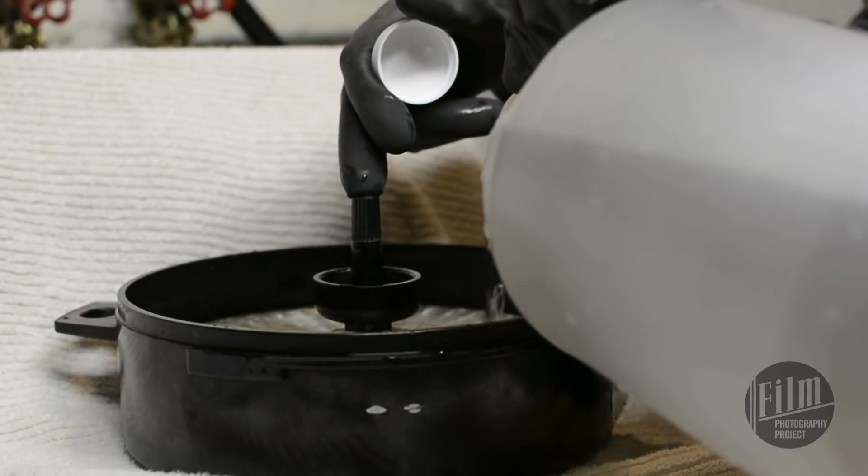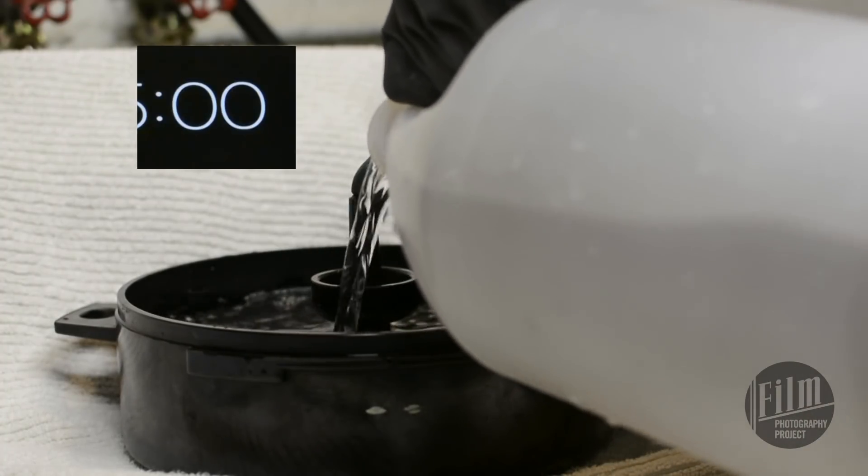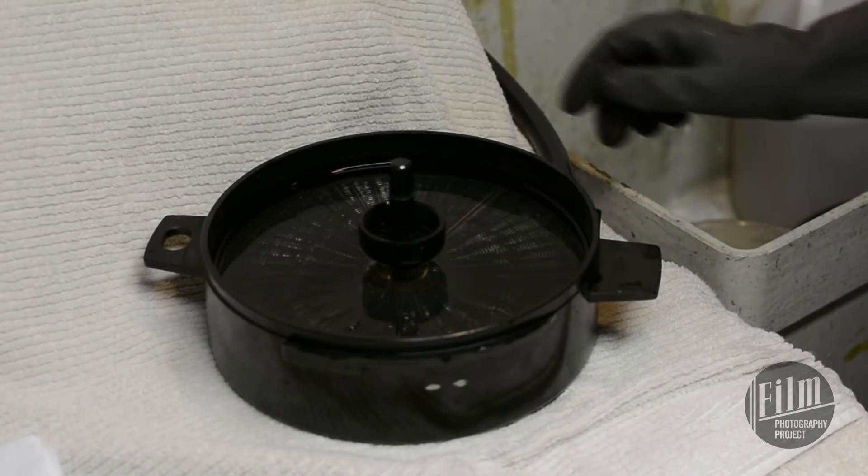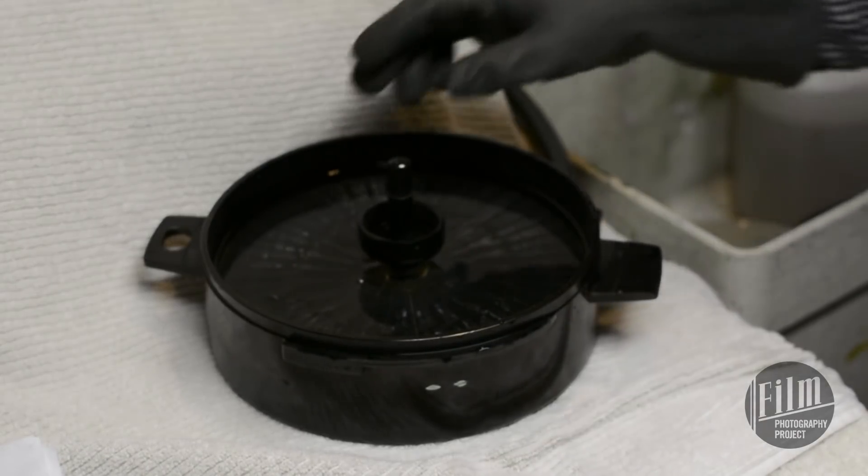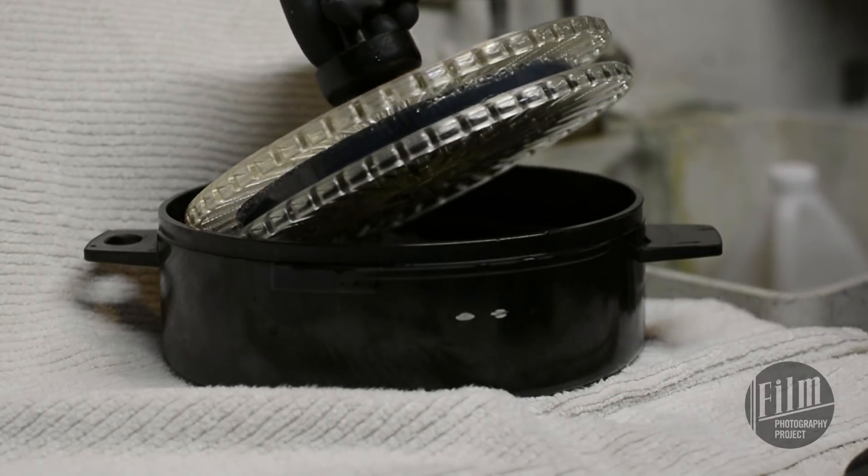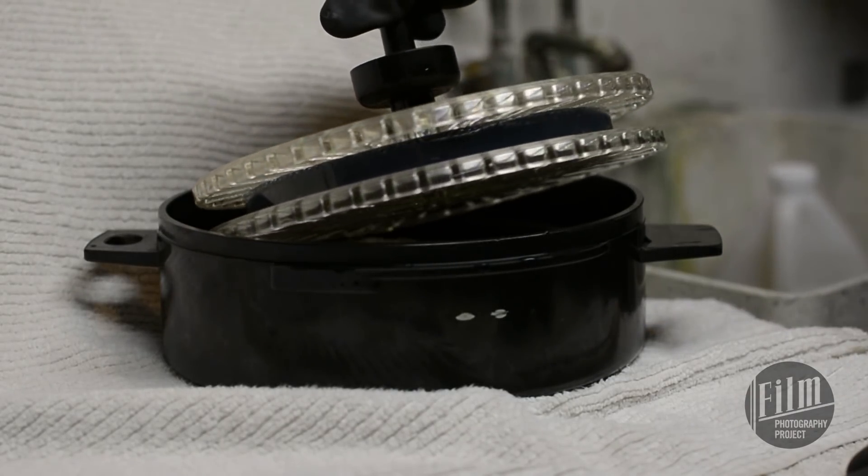Now it's time for the second development. Add your D19 to the tank. Set a timer for 5 minutes. Agitate the same way you did with the developer. After about a minute, inspect the film. You'll see a much darker base with black or gray images.